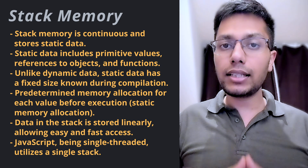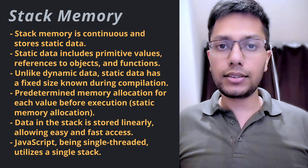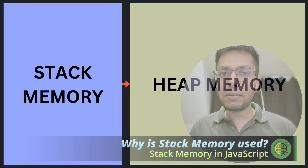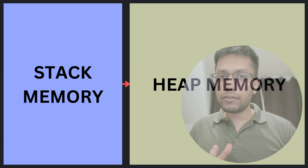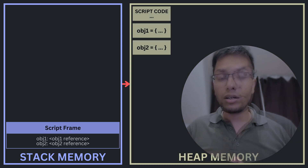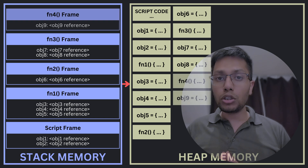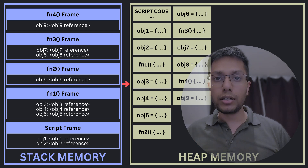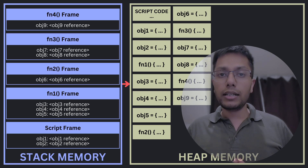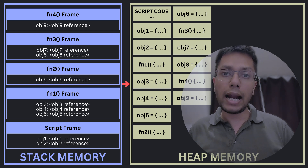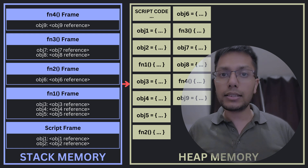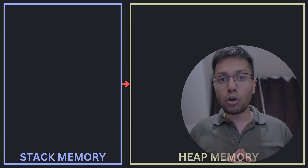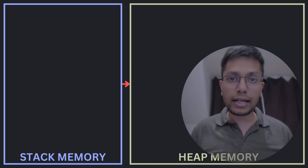The data stored in the stack is in a linear format, so it is easier and faster to access. Since JavaScript is a single-threaded language, it can only utilize one stack. There are certain important advantages of using stack memory instead of just using a heap. First, it is much faster than the heap — the allocation is linear and the engine knows exactly where to find all the data without having to search. Secondly, the size of memory needed is already known at compile time, leading to predictable and optimized memory usage.